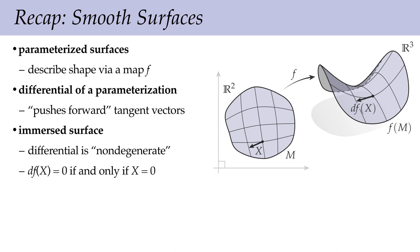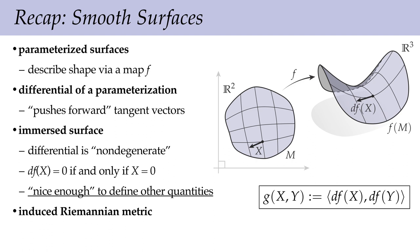The speed of our surface never goes all the way to zero, and this is such an important condition because it lets us define other geometric quantities on the surface. It's the essential condition we need to make sure that at least locally the geometry of the surface is well defined. One particular quantity of interest is the induced Riemannian metric. If we have two vectors x, y in the domain and we want to talk about the inner product between those two vectors, we should always remember that those vectors are going to get stretched out in some interesting way as they go into three-dimensional space.